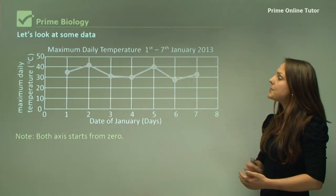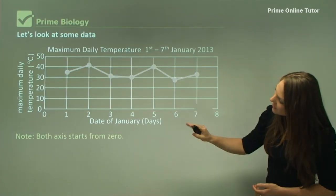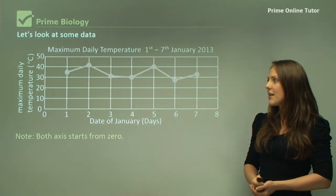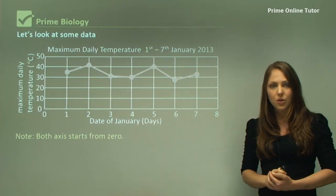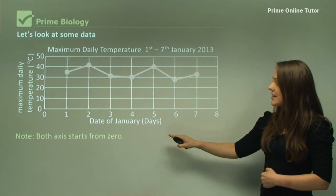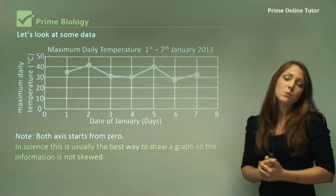You can see here I have got a title: Maximum Daily Temperature from the 1st to the 7th of January 2013. I also have the axis: Maximum Daily Temperature in Degrees Celsius, so there's the units—each of those are actually worth marks. Then we have the date in January in days down the bottom. In science, this is usually the best way to draw a graph so the information is not skewed, starting from zero.